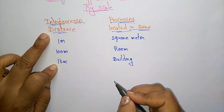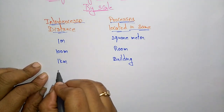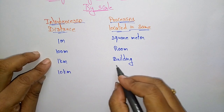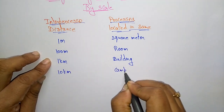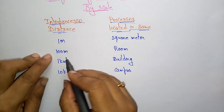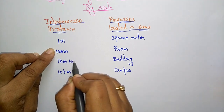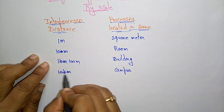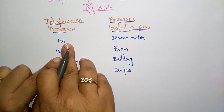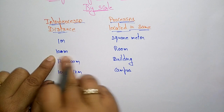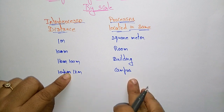And the inter-processor distance — if the network is at 10 kilometers distance, then the processor is located in the same campus. To clarify: 1 meter means square meters, 10 meters means room, 100 meters means building, and 1 kilometer means campus.